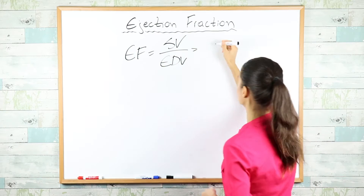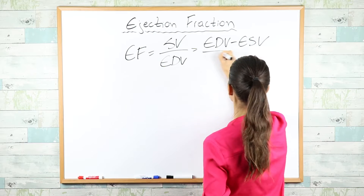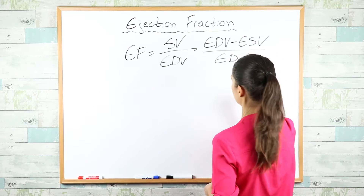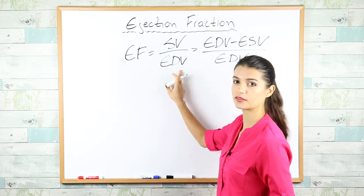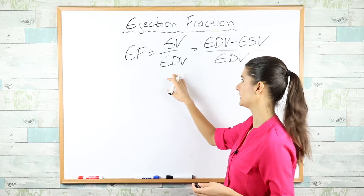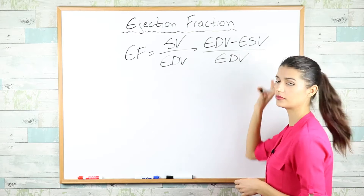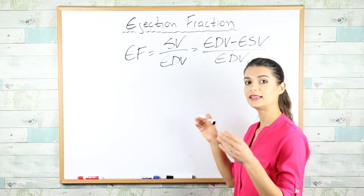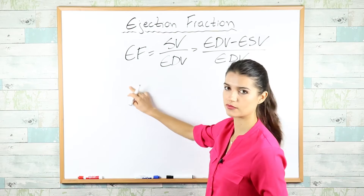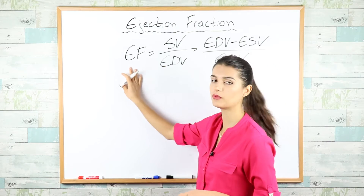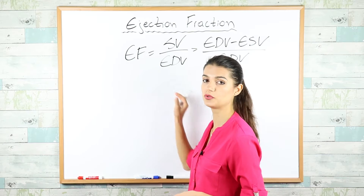Stroke volume is calculated by subtracting end-systolic volume from end-diastolic volume, then dividing again by end-diastolic volume. End-diastolic volume is the blood remaining in the left ventricle at the end of diastole; end-systolic volume is what remains after systole ends. Knowing ejection fraction is the only way to differentiate between heart failure with preserved and reduced ejection fraction.